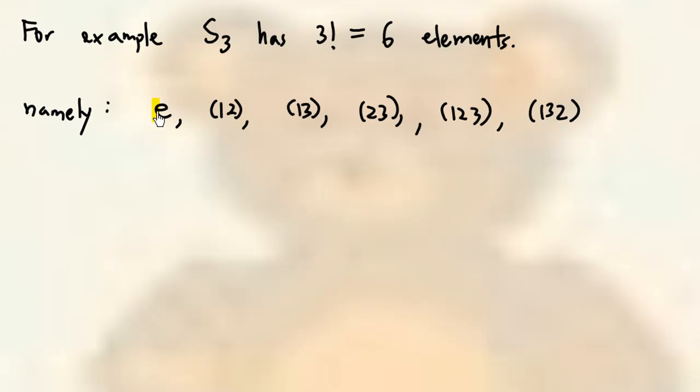the permutations are e, 2-cycle (1 2), 2-cycle (1 3), 2-cycle (2 3), 3-cycle (1 2 3), and 3-cycle (1 3 2). These are the 6 elements in S sub 3.